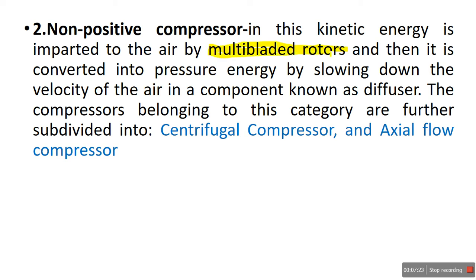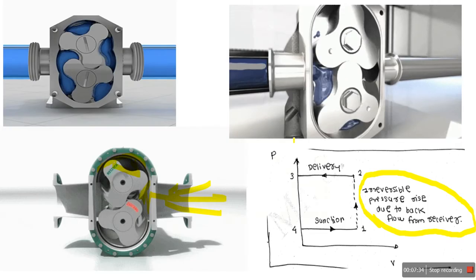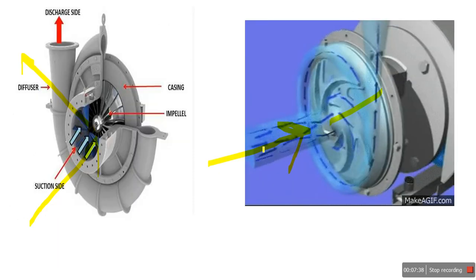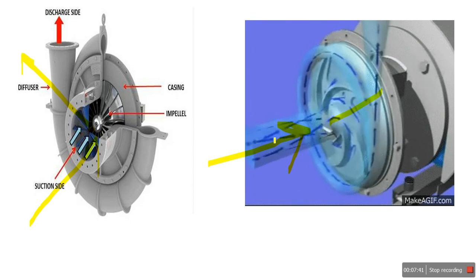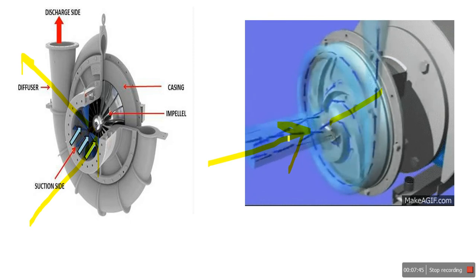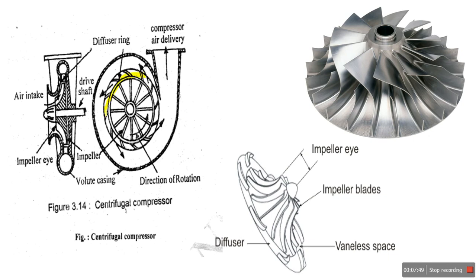In the centrifugal compressor the impeller acts as a multi-bladed rotor, and the kinetic energy imparted to the air is then converted to pressure energy by slowing it down. Initially the impeller imparts kinetic energy and also increases pressure energy. As the air moves into the diffuser, the diffuser reduces kinetic energy and gradually increases pressure energy. Further pressure rise is carried out in the volute casing — so in the impeller there is kinetic and pressure increase; in the diffuser kinetic energy reduces and pressure rises; and the final pressure rise occurs in the volute casing.